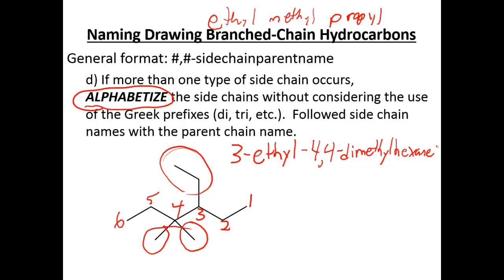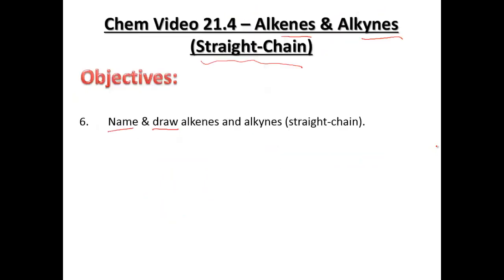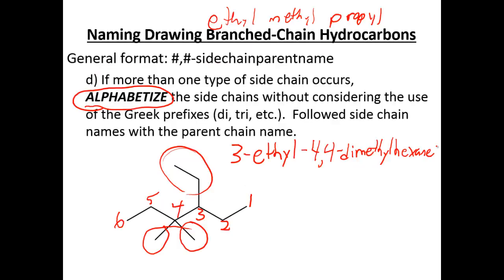Going forward, we're going to be working on finding our parent chain, and then from our parent chain, our side groups and where they're located. We'll continue to work on naming and writing our organic branched compounds.